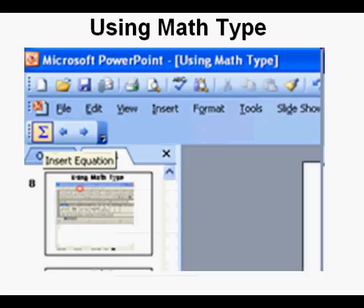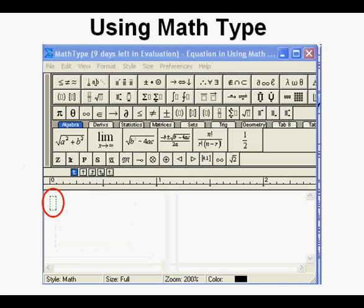To activate MathType from PowerPoint 2003, click the big Summation E here in the upper left corner. It says Insert Equation when you move your cursor over it. This view comes up with the cursor blinking here. Let's enter something that would be difficult to do without something like MathType, the quadratic formula for instance.